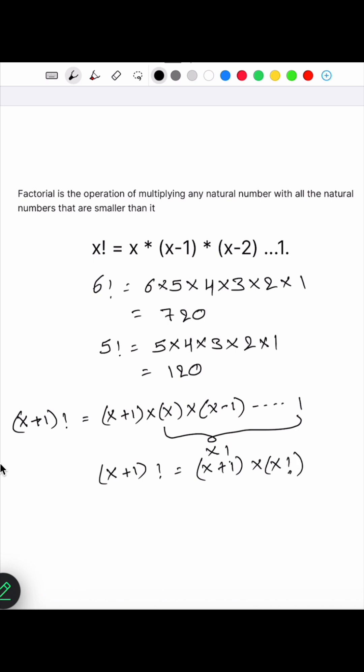From rearranging this formula, we get x factorial is equal to x plus 1 factorial divided by x plus 1.